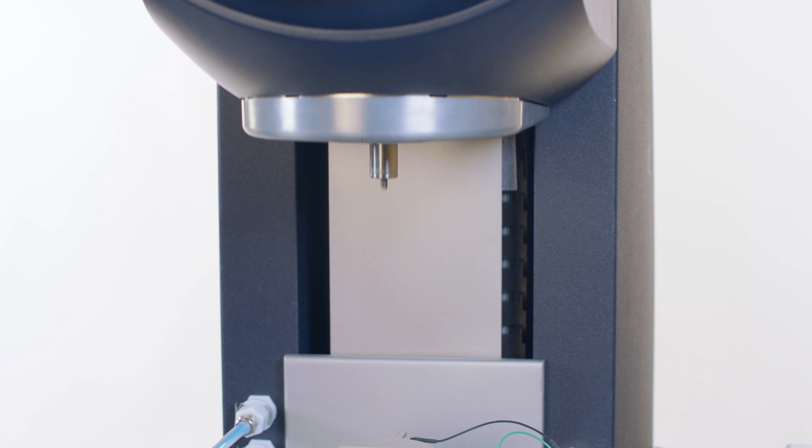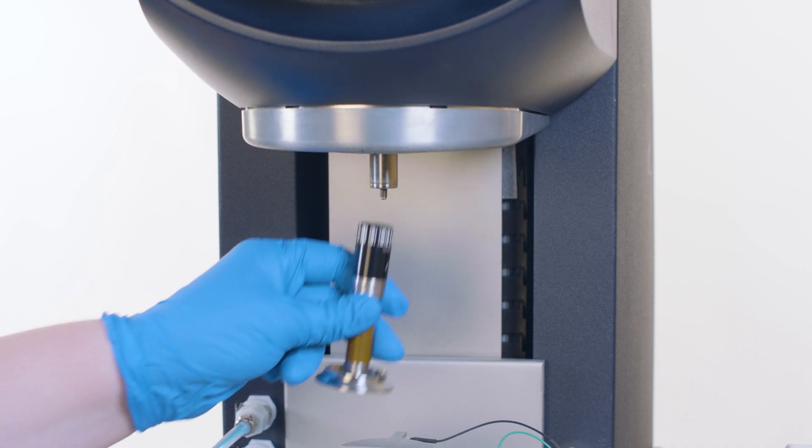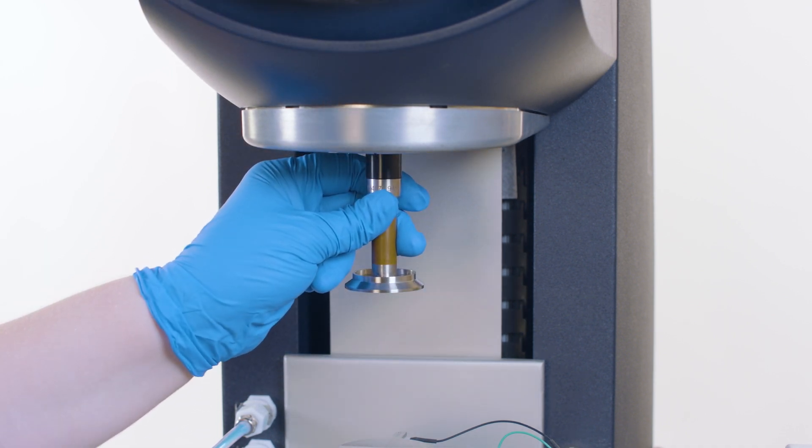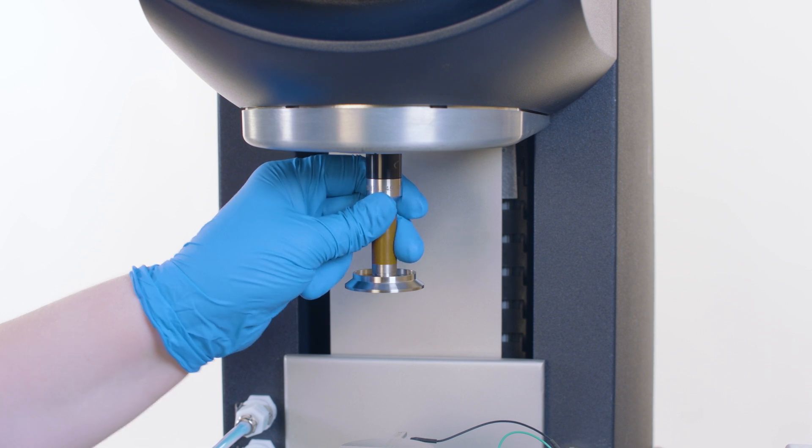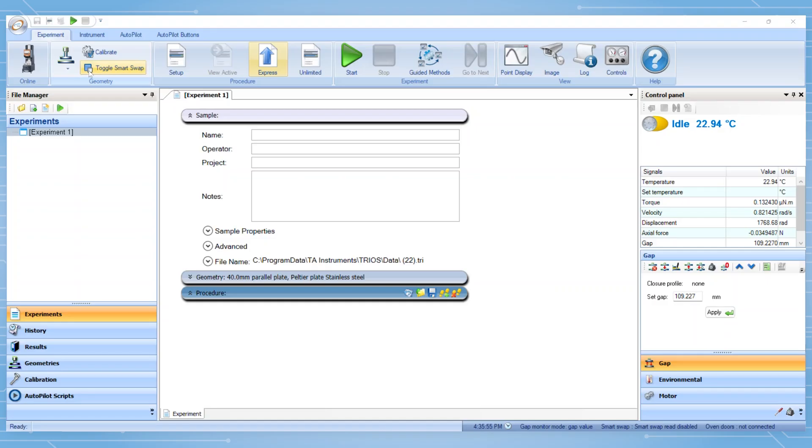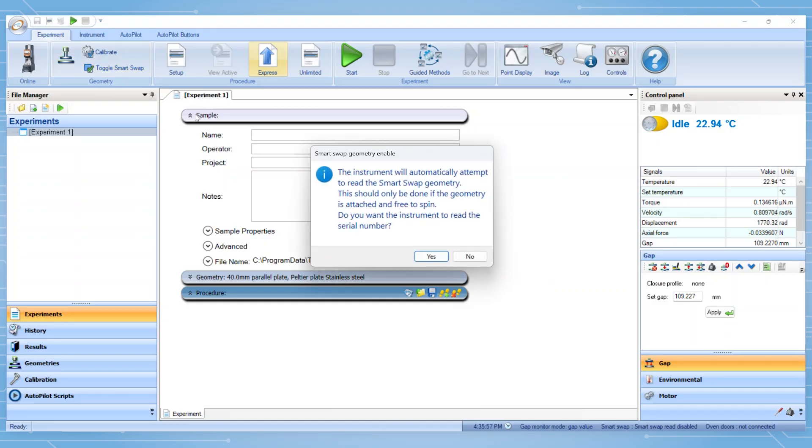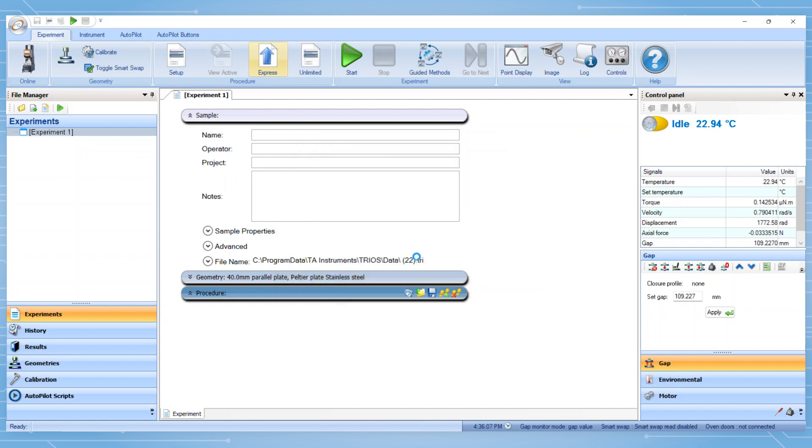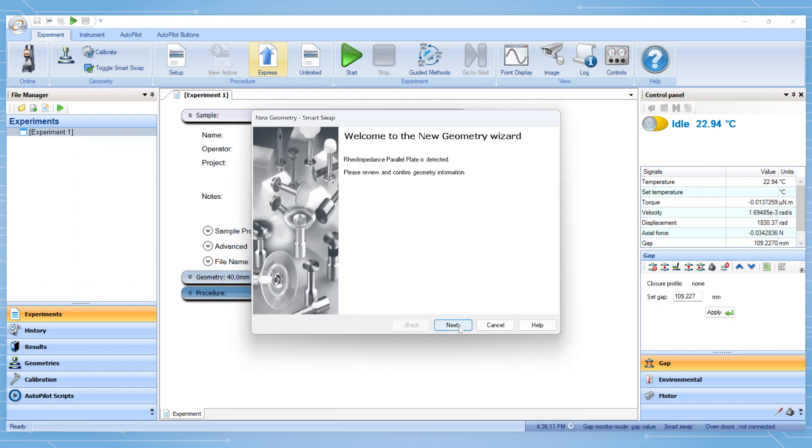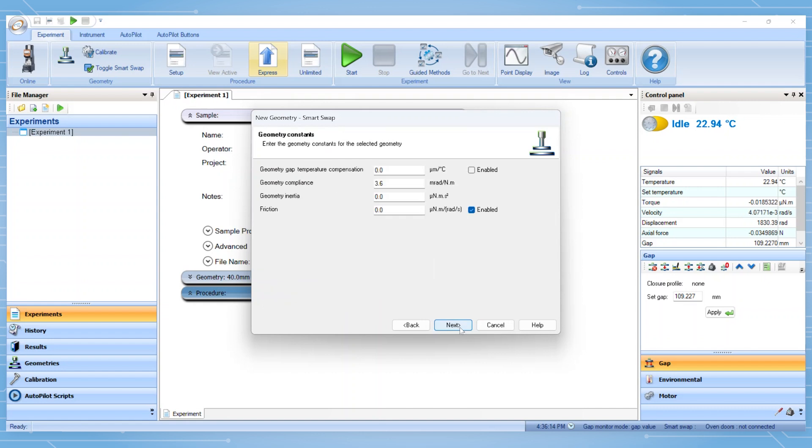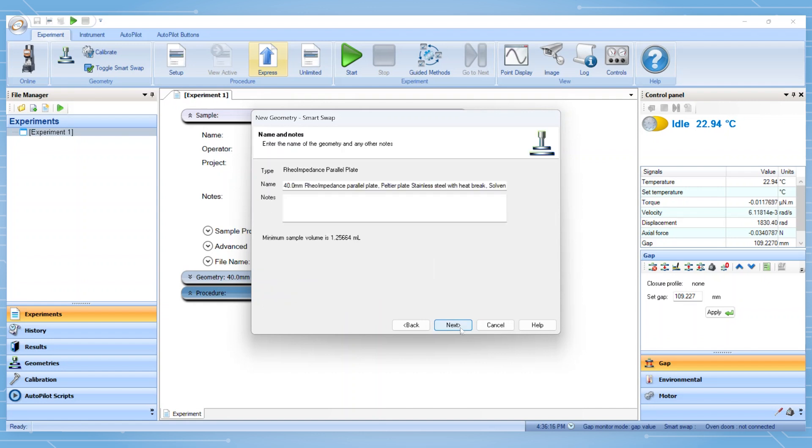Next, the head may be lowered to install the upper RAIOIS geometry. Push the geometry up the spindle and screw the draw rod finger tight. With smart swap enabled, the instrument will read the barcode on the geometry and prompt the new geometry wizard. Click Next, and finally click Finish.